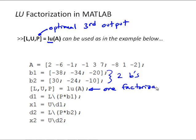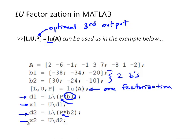We do one factorization, then solve for our first D1 — using the permutation matrix to track any row shifts in B — and then solve for X1. The second time, we solve for D2 with the permutation matrix, and then solve for X2.